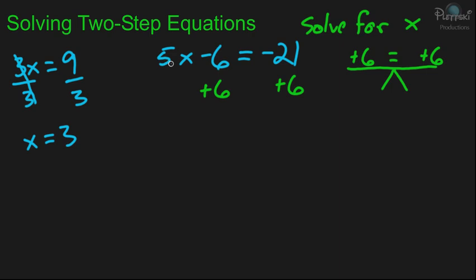Now, on the left side here, we have a 5x minus 6 plus 6. Now, the minus 6 and the plus 6 are going to cancel out because negative 6 plus 6 is 0. So, those cancel out. So, you're left with 5x on that side of the equation. And then you have a negative 21 plus 6. And that's going to give you a negative 15.